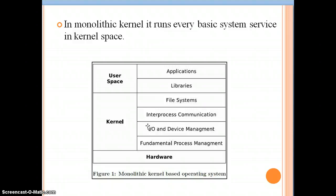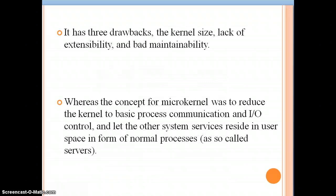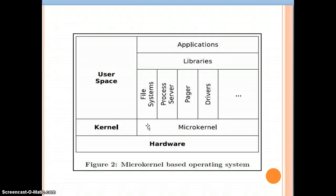To avoid this drawback, we can use the micro kernel. The micro kernel was used to reduce basic process communication and input/output control, and lets the other system services reside in the user space rather than in the kernel space. Normally all the processes reside in the user space while running or during execution. This is the structure of the micro kernel based operating system.